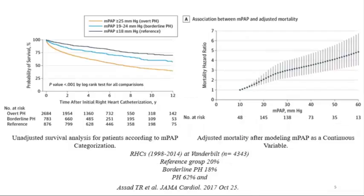That was replicated in multiple studies, including a study from Vanderbilt with about 4,000 patients showing the same trend—adjusted and unadjusted mortality. People with borderline pulmonary hypertension have worse outcome. The updated guidelines anticipated by the end of this year may actually change the definition of pulmonary hypertension, lowering the cut point from 25 to 20, reflecting these studies and others published after the 2015 guidelines.